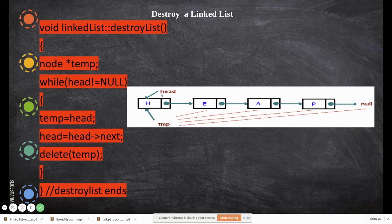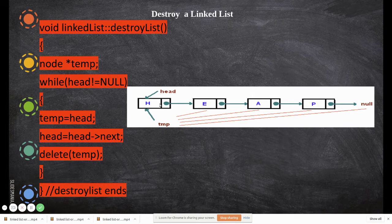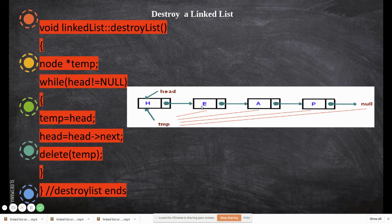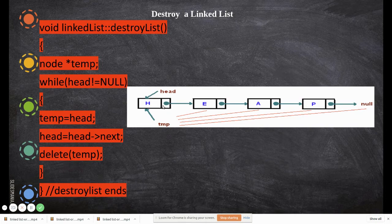While head is not equal to null — until it reaches the end of the list — inside the while loop, temp is first made to point to head, and then the head pointer is moved to the next node. At this point, temp is pointing to the first node and head is pointing to the second. We then delete the node pointed to by temp, so that node is deleted. Head is still pointing to the second node.